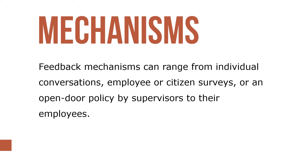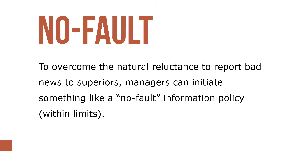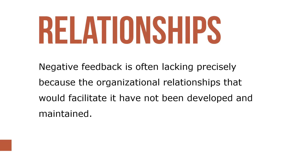Feedback mechanisms can range from individual conversations, employee or citizen surveys, or an open-door policy by supervisors to their employees. A complicating factor in the feedback process is the strong tendency for good news to travel freely up the line, but for bad news to be suppressed or rewritten. To overcome the natural reluctance to report bad news to supervisors, managers can initiate a no-fault information policy within some appropriate limits. Such feedback must develop in the context of positive, supportive, trust-based interactions between supervisors and subordinates. Negative feedback is often lacking precisely because the organizational relationships that would facilitate it have not developed.